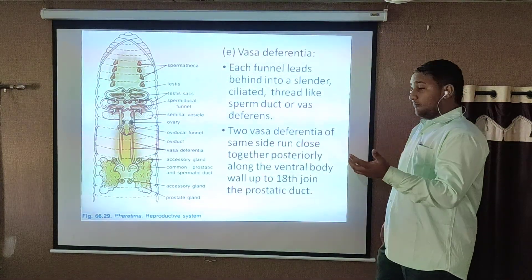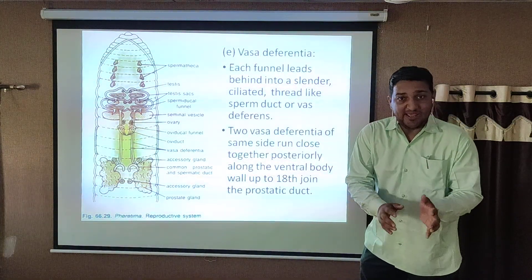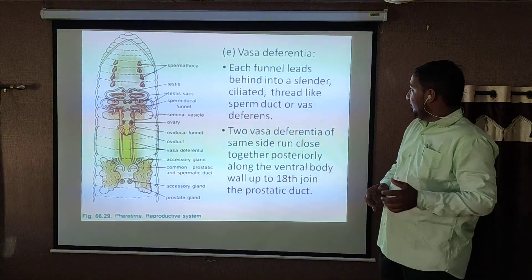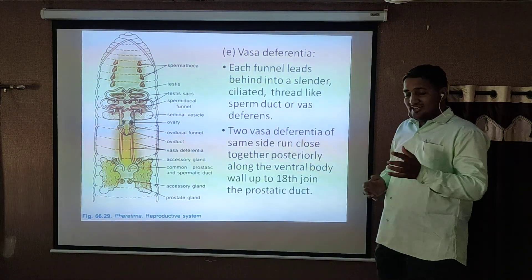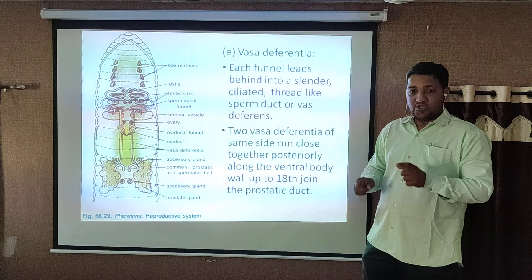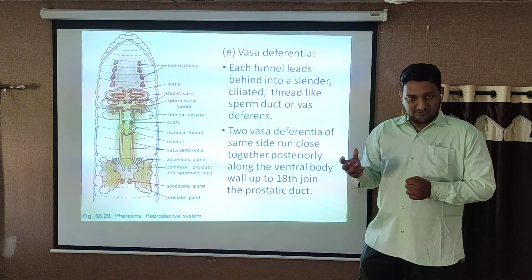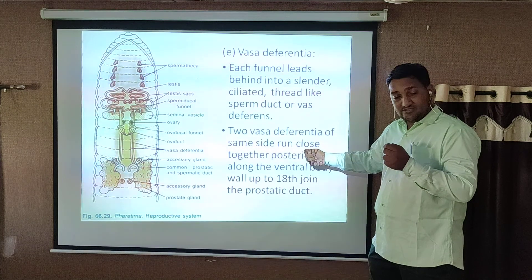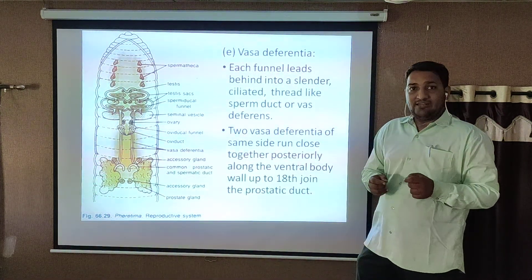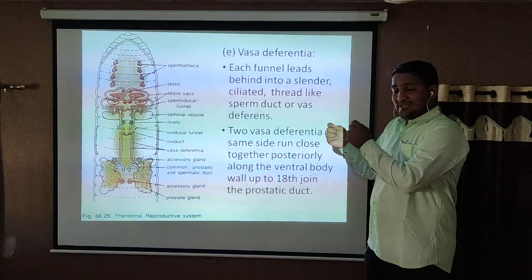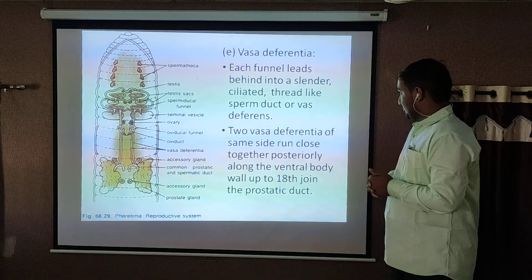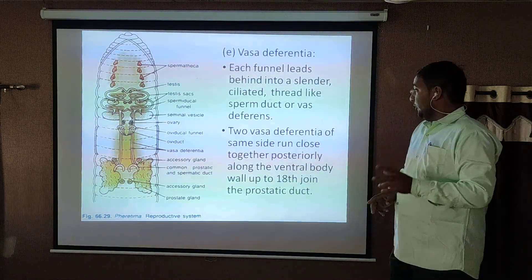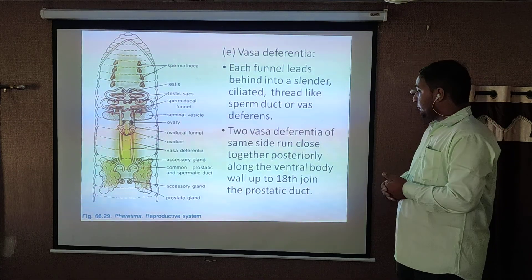Now, the vas deferens or sperm duct, which carries the sperm from one place to another. Each funnel leads into a slender ciliated duct-like structure. The inner lining of the duct contains many cilia-like structures. This is known as the sperm duct or vas deferens. Two vas deferentia on the same side run close together posteriorly along the ventral body wall.